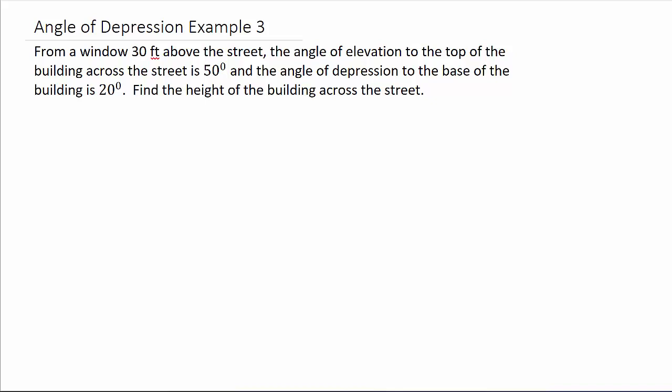All right, so let's look at this problem. It says, from a window 30 feet above the street, the angle of elevation to the top of the building across the street is 50 degrees, and the angle of depression to the base of the building is 20 degrees. Find the height of the building across the street.